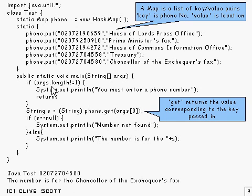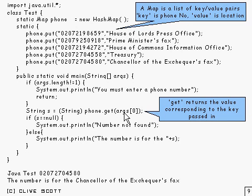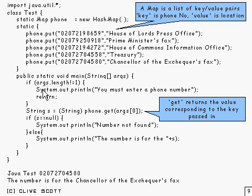The first thing we do is we test to see where the argument length is 1 passing in, and if it's not then you complain about it and return. Then what we do is we get the value associated with that particular phone number that we've entered, cast it to a string because it comes out as an object, and then we say if the string is null then the number is not found, otherwise the number is found and whatever the string is — and that's what gets printed out.